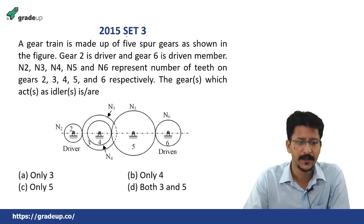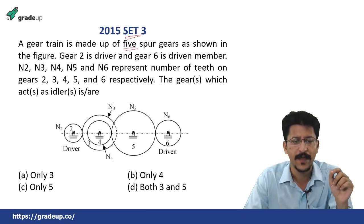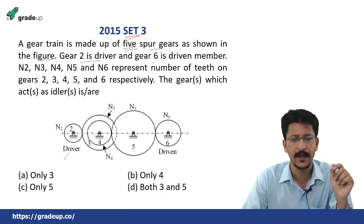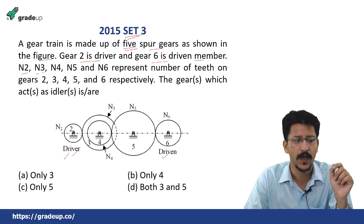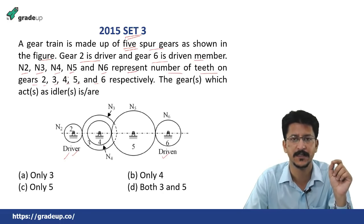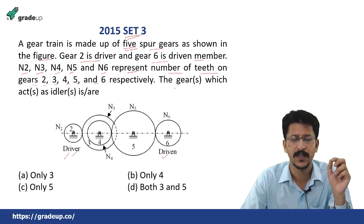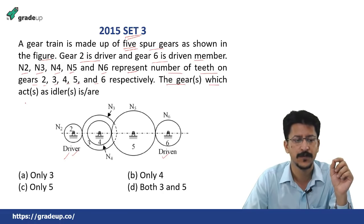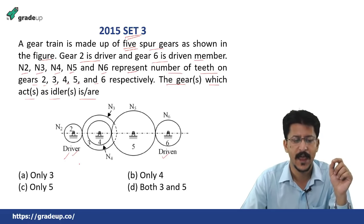Same year 2015, different set — Set 3. A gear train is made up of 5 spur gears as shown in the figure. Gear 2 is the driver and gear 6 is the driven member. N2, N3, N4, N5 and N6 represent the number of teeth on gears 2, 3, 4, 5 and 6. The numerical values are not given. It is asked which gears act as idlers.